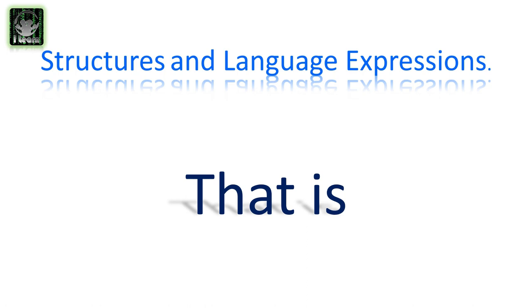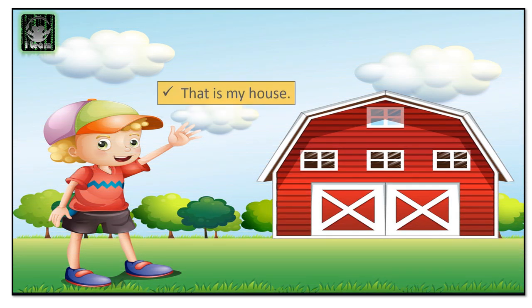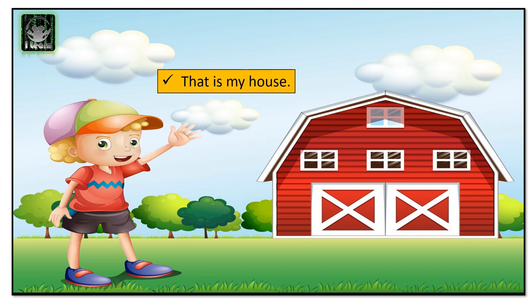Now let's learn 'that is' in sentences. Look at this picture — do you see the boy? He is showing his house. His house is a bit far from him, so he is pointing his hand towards his house and says: that is my house. We use 'that is' to introduce something or someone far away from us. We use a pointed hand for these types of sentences to show the distance.